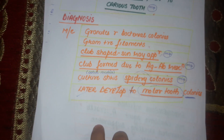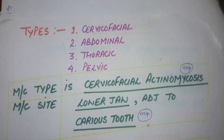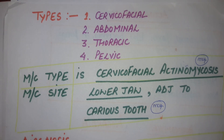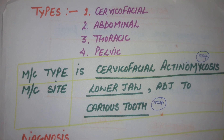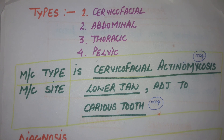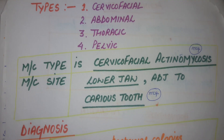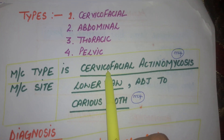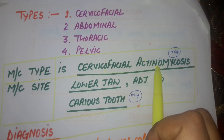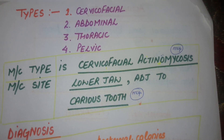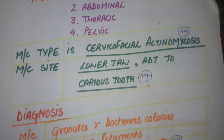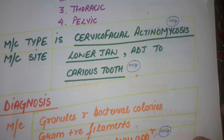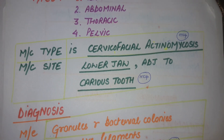Coming to the types of Ectanomycoses: these are Cervicofacial, Abdominal, Thoracic, and Pelvic. The most common type of Ectanomycoses is Cervicofacial Ectanomycoses — kindly note this point. And the most common site is the lower jaw, especially adjacent to the carrier's tooth.